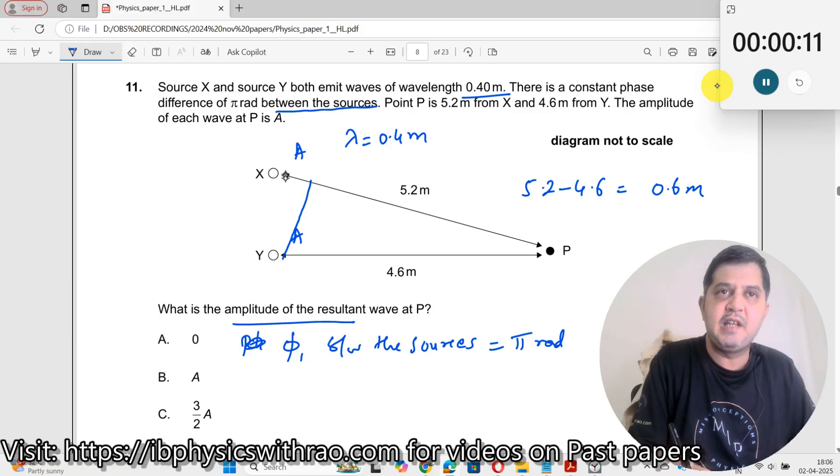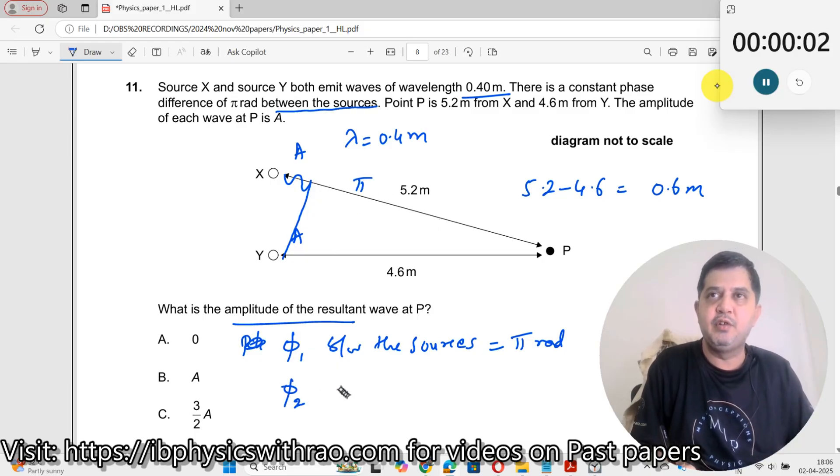Probably there could be three waves like this over here. So definitely this is introducing another path difference of π radians, so you get another π too, which is introducing another π radians over here.